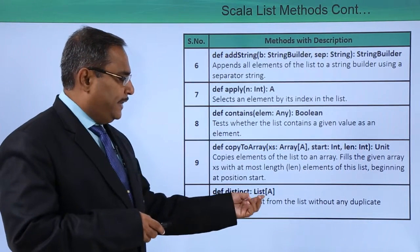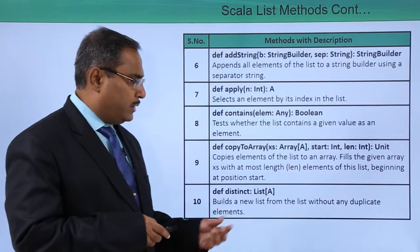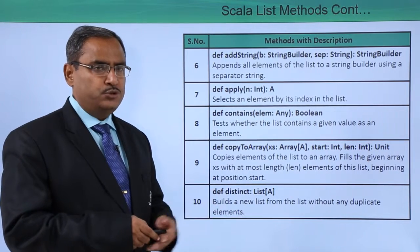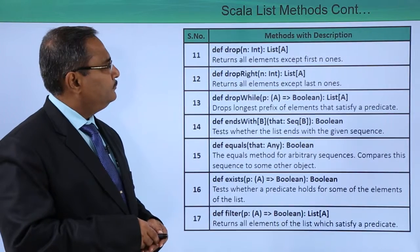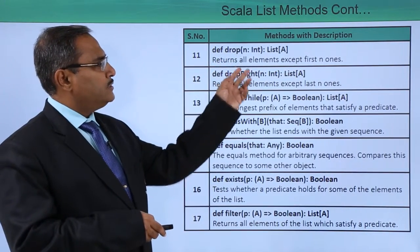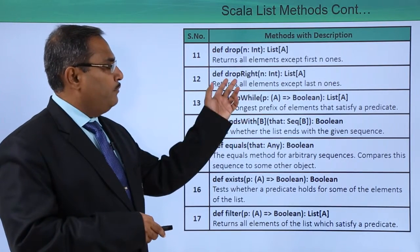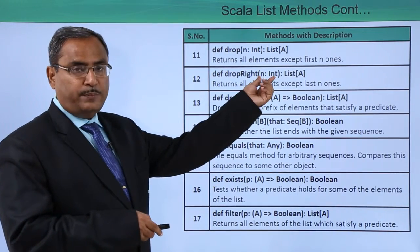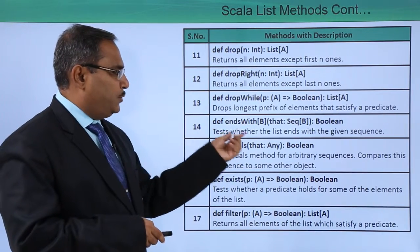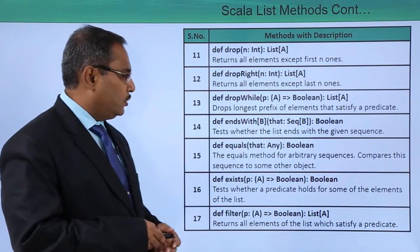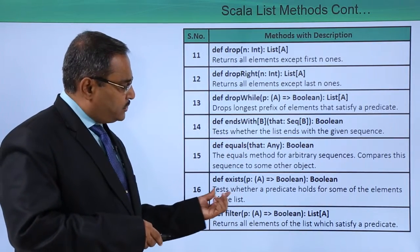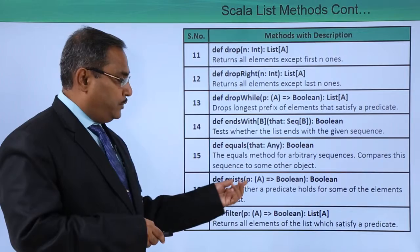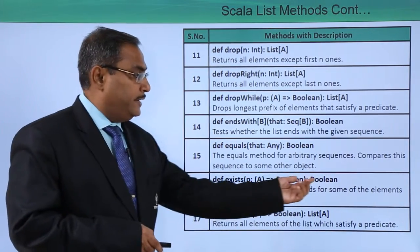The `distinct` method builds a new list from the list without any duplicate elements. The `drop` method returns all elements except the first n ones, and `dropRight` returns all elements except the last n ones — both accept n as an input parameter. `endsWith` tests whether the list ends with a given sequence. `exists` tests whether a predicate holds for some elements of the list, returning a boolean.